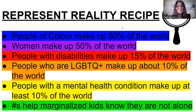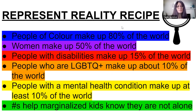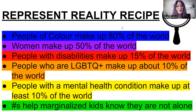People of color make up about 80% of the world. Women make up 50% of the world. People with disabilities make up 15% of the world — that's about a billion people. People who are LGBTQ+ make up about 10% of the world — it ranges between about 5% to 20% in different studies. People with a mental health condition make up at least 10% of the world. It's important to share these numbers with students because it helps marginalized kids know they're not alone.